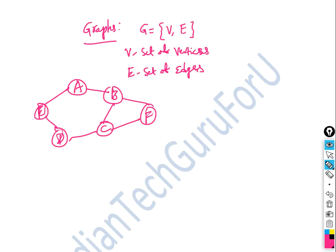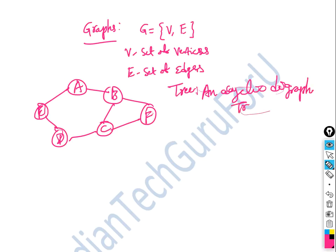A graph has at least one cycle, or more than one cycle. That's why we define a tree as an acyclic digraph. An acyclic digraph is defined as a tree — it is acyclic, meaning it has no cycles.